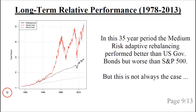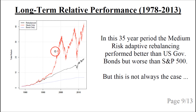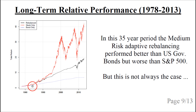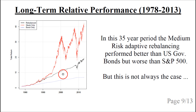Let's compare the long-term performance of the medium risk adaptive rebalancing strategy, shown as the black line, to the S&P 500 with reinvestment of dividends shown as the red line, and an investment in US government bonds with annual reinvestment shown as the blue line. We can see that the rebalancing is somewhere between the US government bonds and the S&P 500.